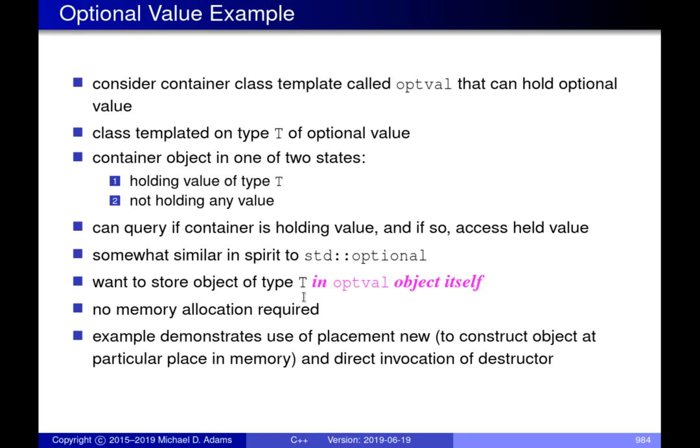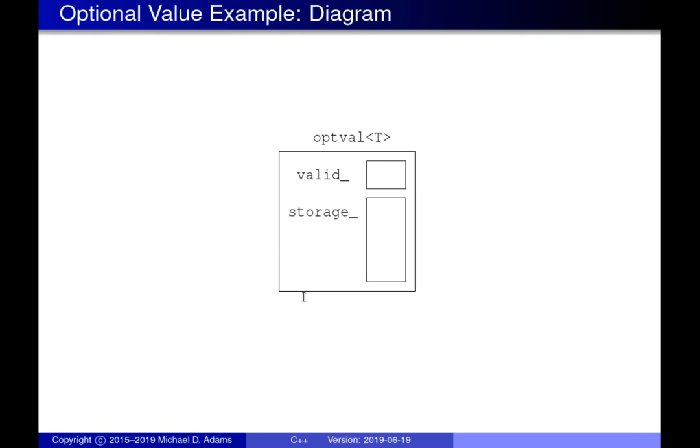We want to actually store the object of type `T` in the `opval` object itself. This is why we need to resort to the techniques from the earlier lectures. The picture is: we have a Boolean field, which is true or false to say whether there's actually a `T` stored in this object. If there is, the storage area will hold that `T`. The storage area is suitably aligned to hold a `T`, and its size will be `sizeof(T)`. Because we're storing the `T` object inside the `opval` object itself, we have to use operator new, placement new, and explicit calling of destructors.